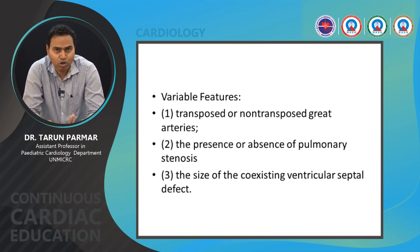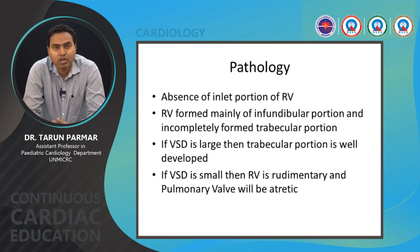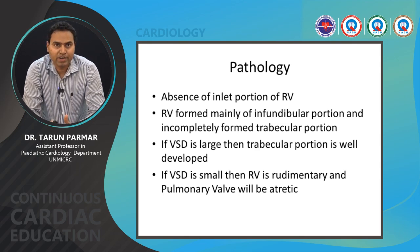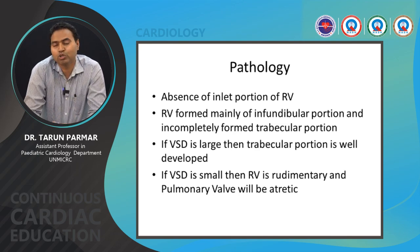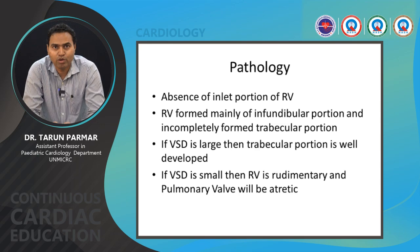Pathologically, there is absence of the inlet portion of the right ventricle due to non-development of the tricuspid valve. The RV is hypoplastic with absence of the inlet portion; the infundibular portion is also incompletely formed. The trabecular portion is variable — if the VSD is large, the trabecular portion is well developed, but if the VSD is small or restrictive, the trabecular portion is very hypoplastic.